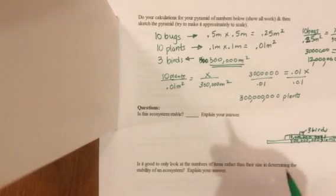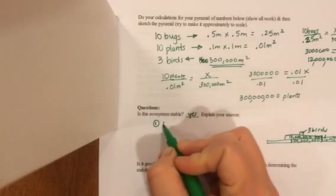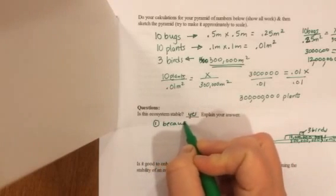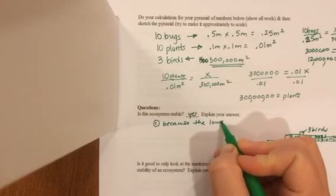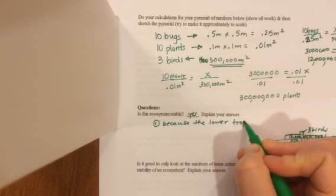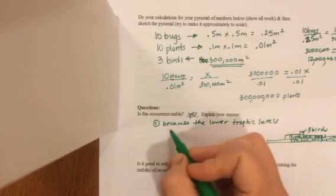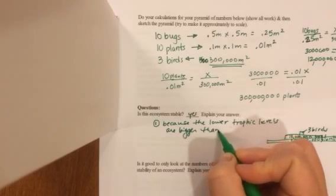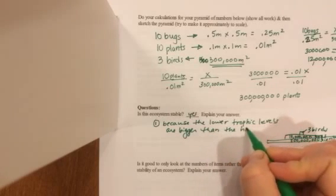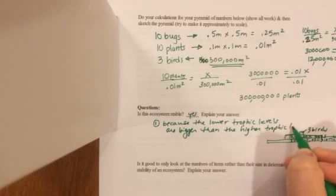But is this ecosystem stable? Yes. One reason. Because the lower trophic levels are bigger than the higher trophic levels.